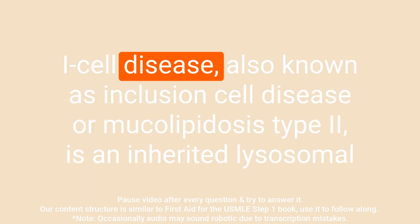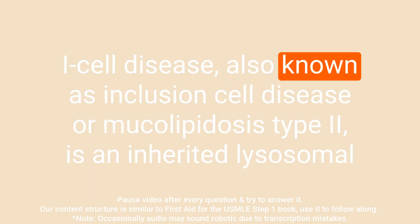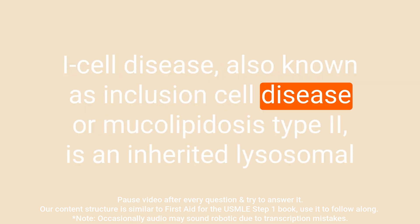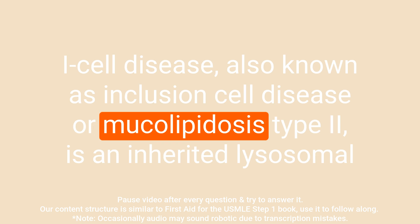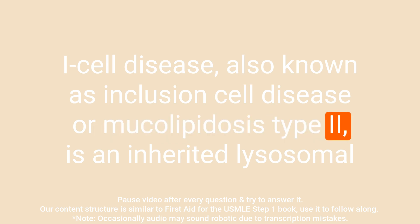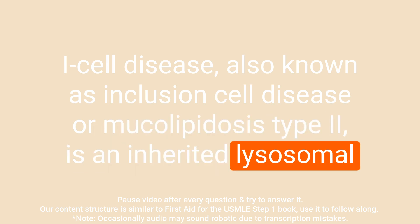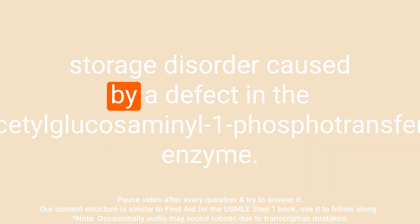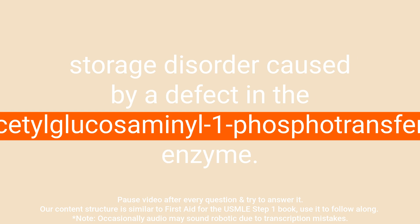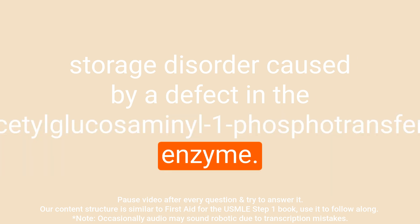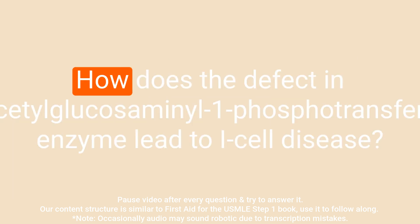I cell disease, also known as inclusion cell disease or mucolipidosis type 2, is an inherited lysosomal storage disorder caused by a defect in the N-acetylglucosaminyl-1-phosphotransferase enzyme.